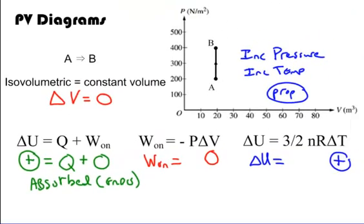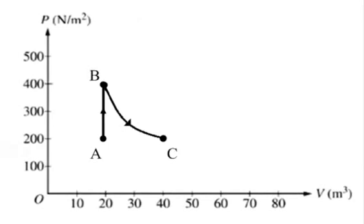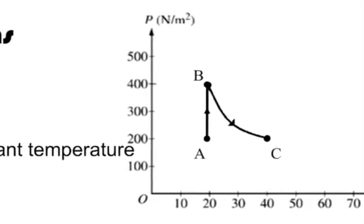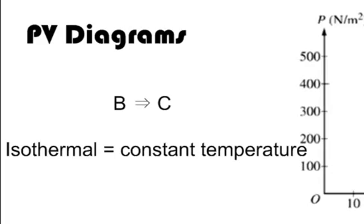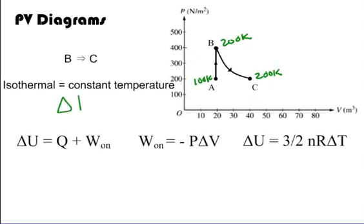Now let's look at the second part of the PV diagram, from B to C. We have a curve — if you've seen Boyle's Law in chemistry, you've seen this before. This is isothermal, meaning constant temperature. At B we're at 200 Kelvin, and at C we're still at 200 Kelvin. Since there's no change in temperature, the change in internal energy is zero.